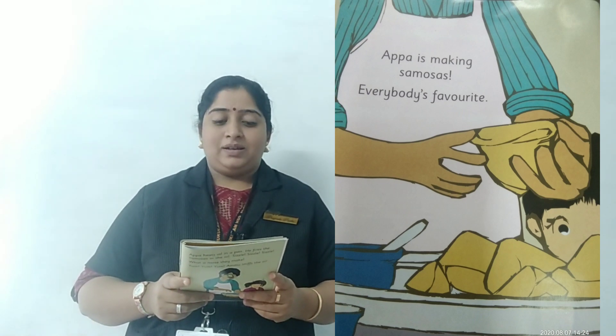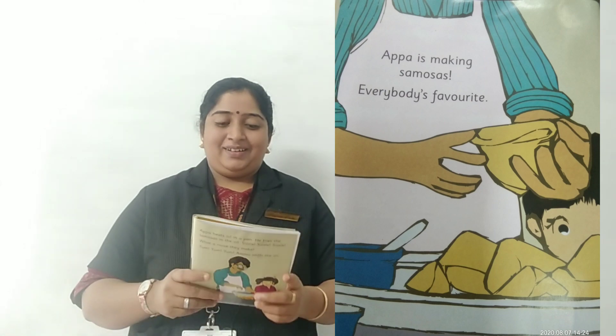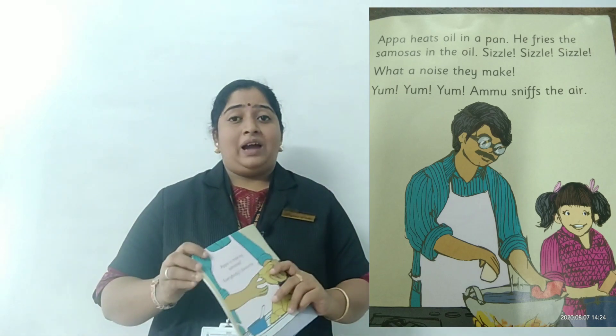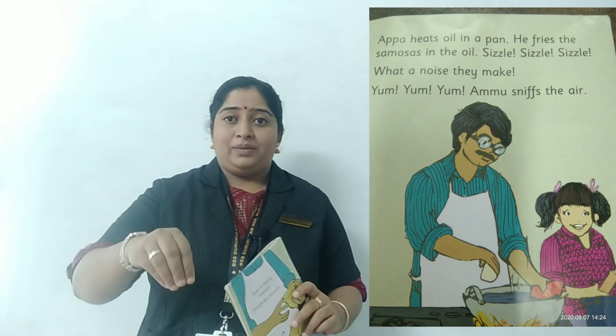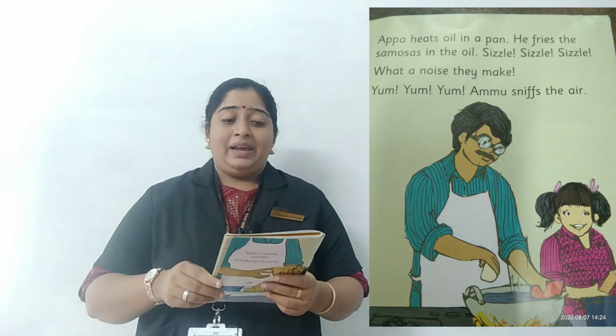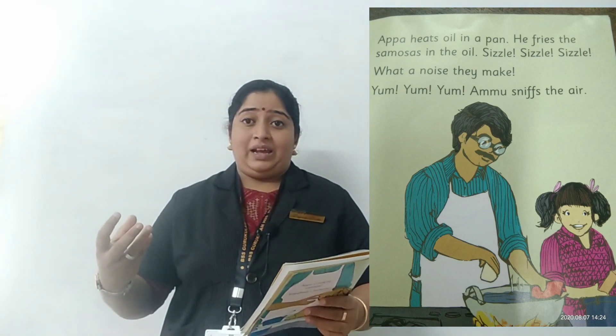Turn the page. Appa is making samosas — everybody's favourite. Appa heats oil in a pan. For making samosas, we have to heat the oil in a pan. For frying the samosas, we need oil. He fries samosas in the oil. Samosas are filled with vegetables. What are the vegetables he used to fill that samosa? That we have to find out.